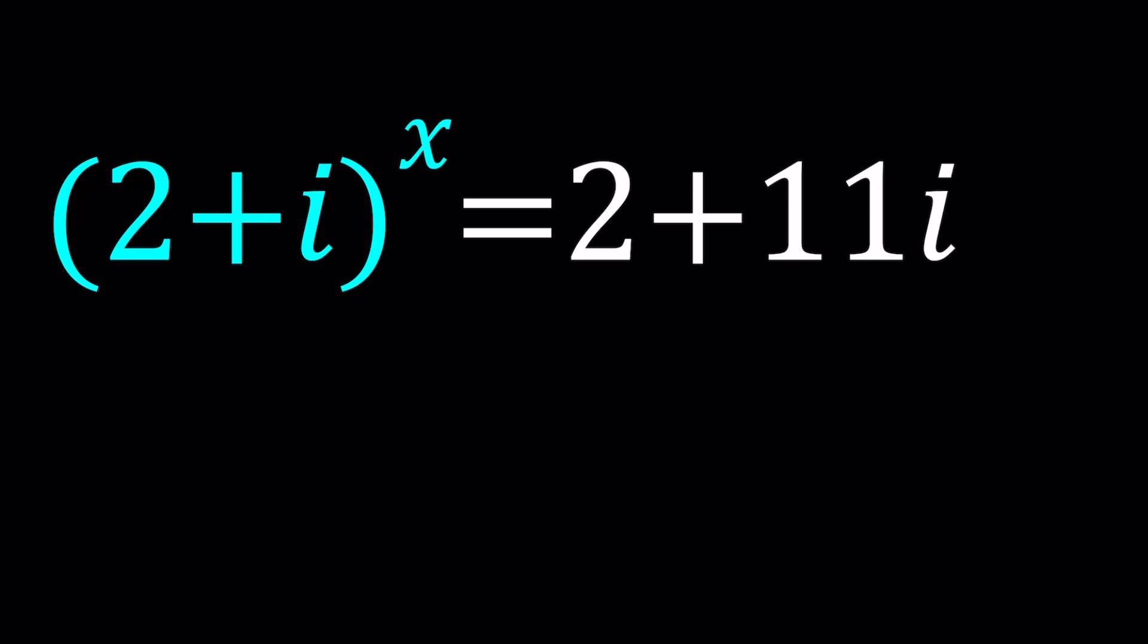So we have (2+i)^x = 2+11i. So it's kind of like a funny relationship. You take a complex number and raise it to the power x, and then it's the same thing as adding 10i to the number. Okay, let's see how this all works out. So I'll try to present two methods. The second method might be a little short, but I'll just give you the idea. So let's start with the first method.